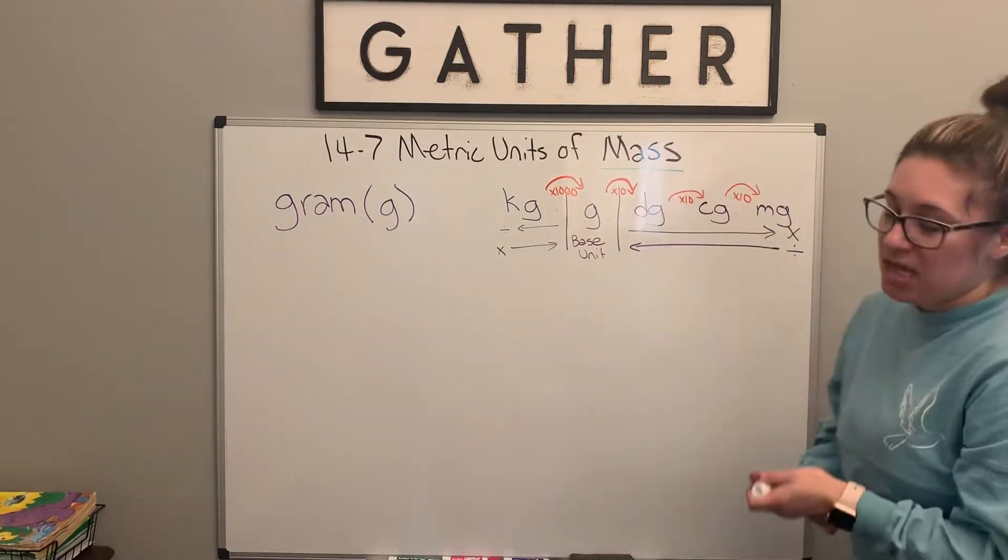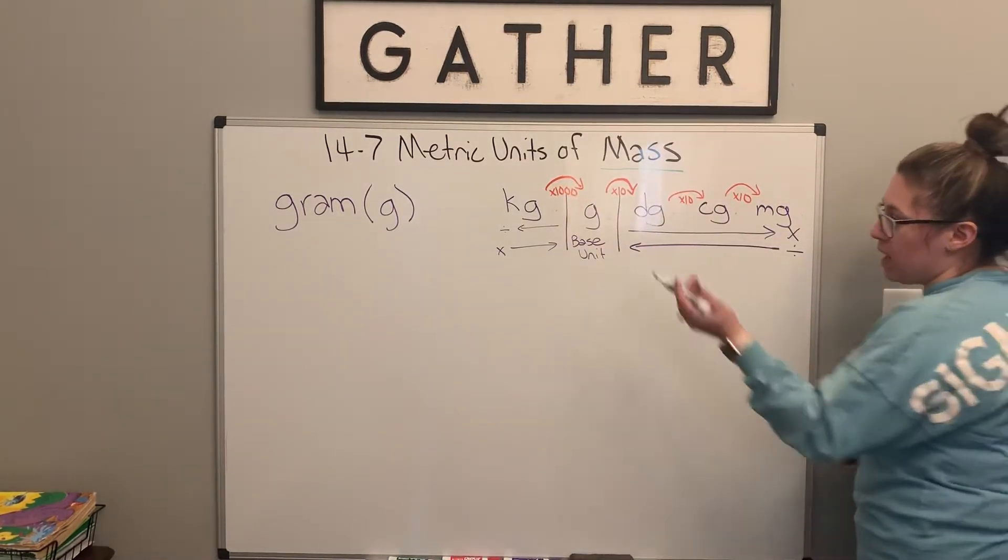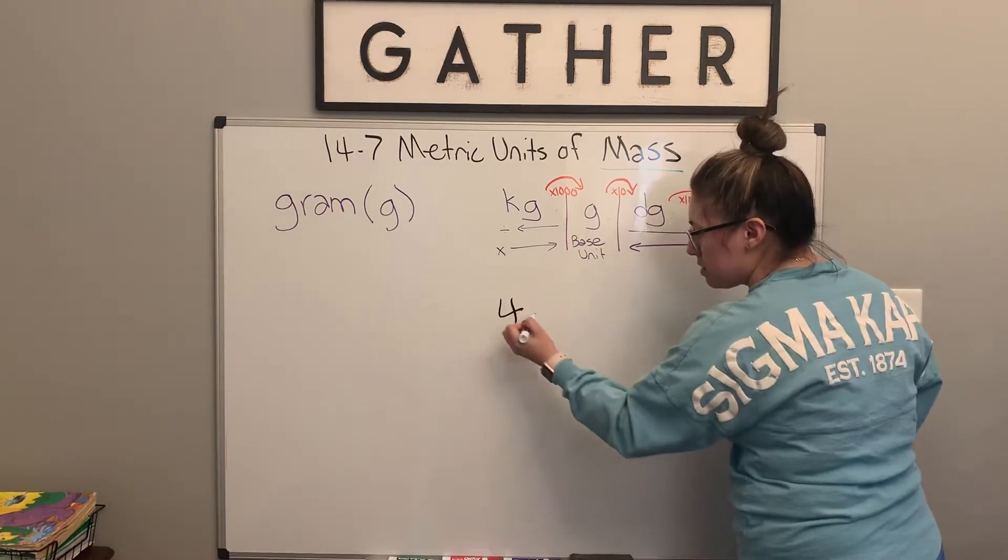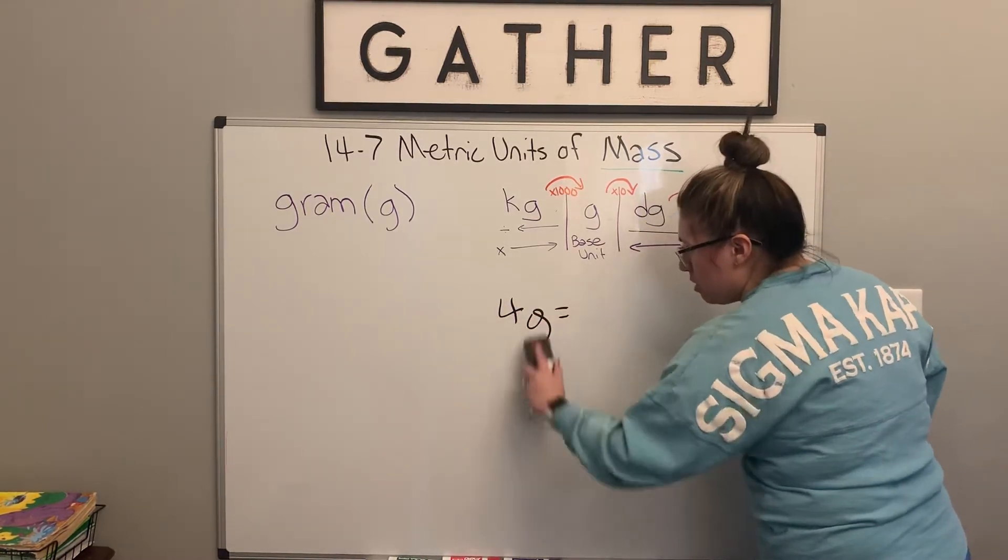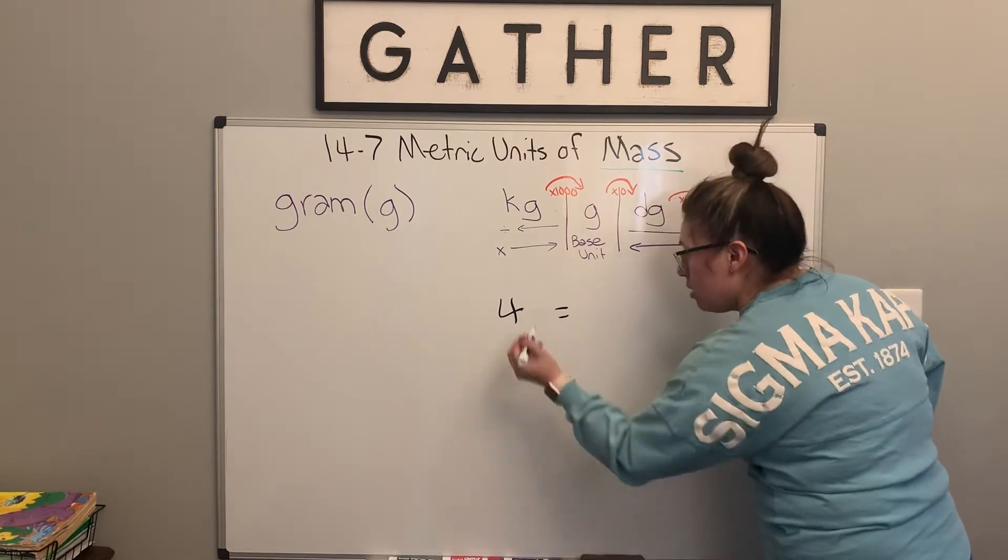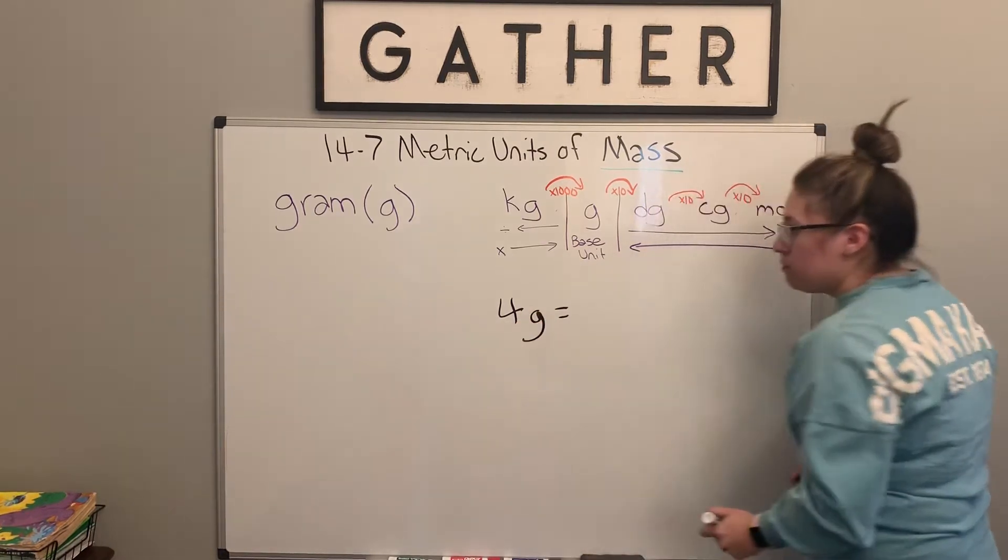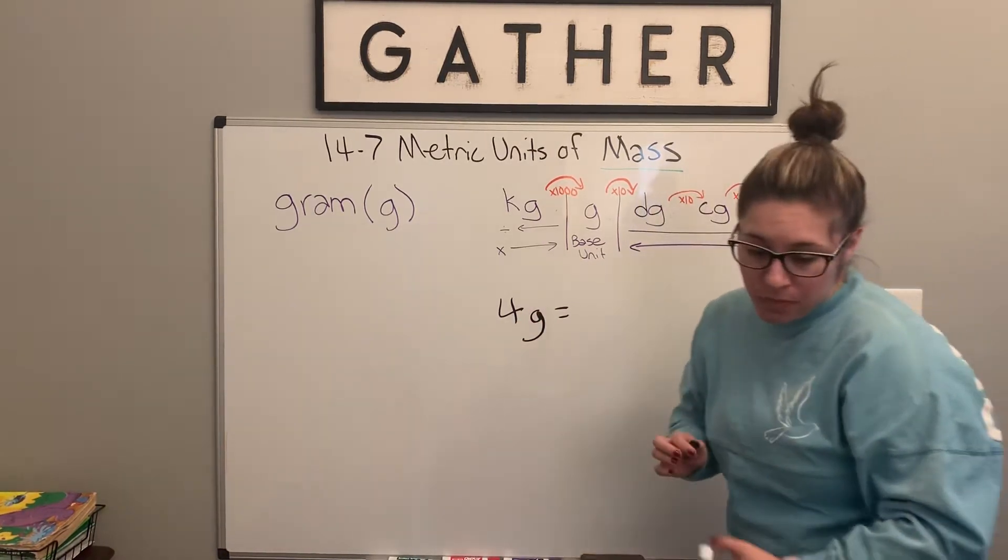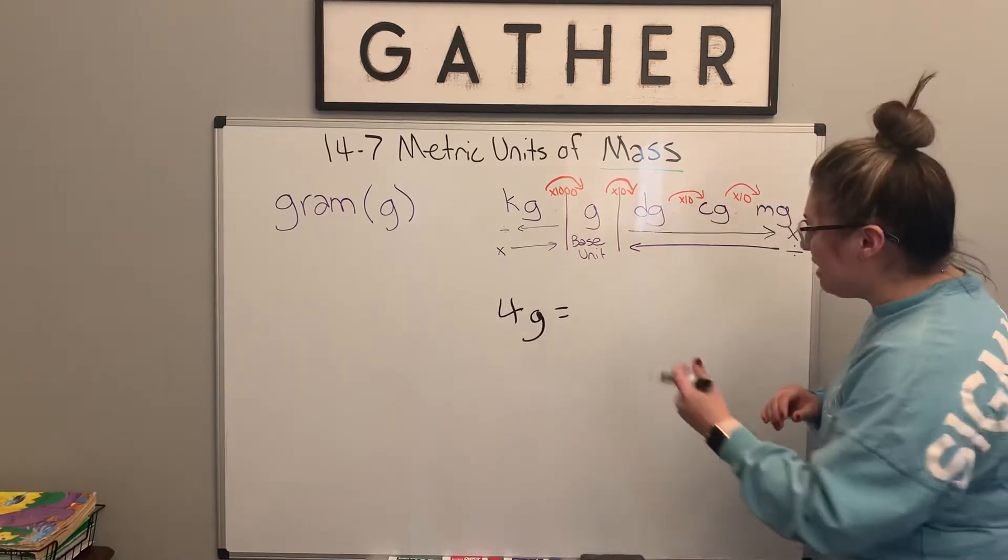So our first example today is with grams. So we have four grams of something. That's a silly G. There we go. I can't make G's today.